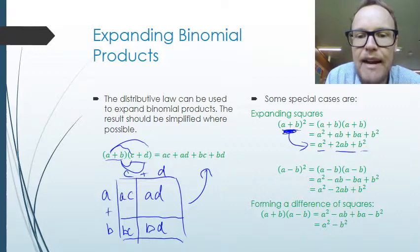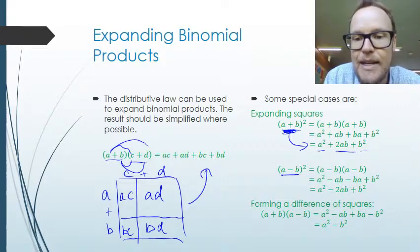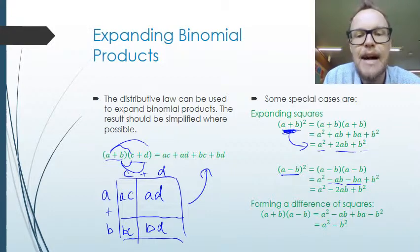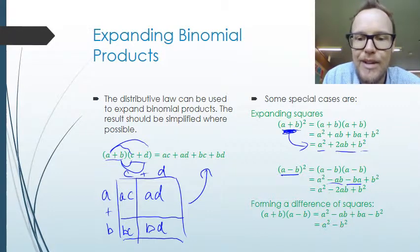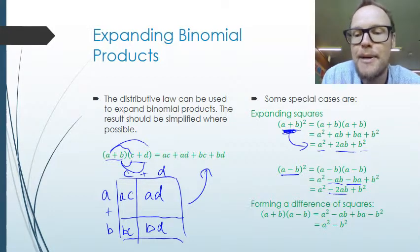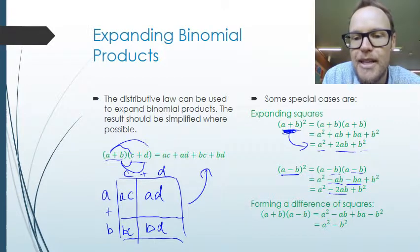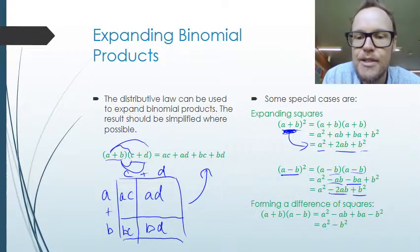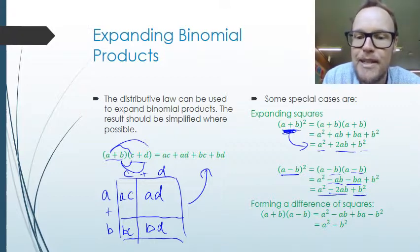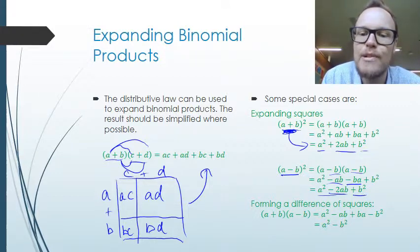Similarly, if we have A minus B all squared, we get A squared, then minus AB and minus a further AB to combine to make minus two AB. Because we've got negative B times negative B, that becomes positive B squared. So we get A squared minus two AB plus B squared when we have A minus B all squared.